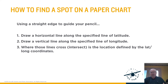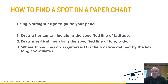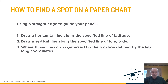How to find a spot on a paper chart — we did this exercise in class. You need to use a ruler or some kind of straight edge or a plotter. Draw a horizontal line along the specified line of latitude, draw a vertical line along the specified line of longitude — where those two lines intersect is the location defined by the lat/long coordinates. Since you're not in class, that's going to be difficult. You could use this video to review as well.